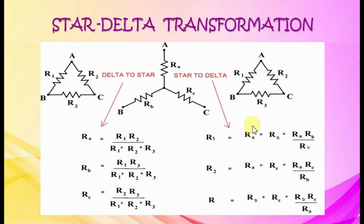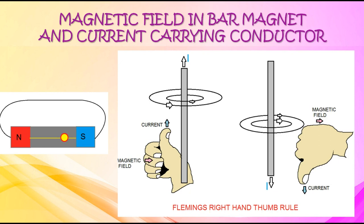Magnetic field in a bar magnet and current-carrying conductor. Inside a bar magnet, magnetic flux flows from south to north; outside, flux flows from north to south. When a conductor carries current, a flux develops around it. The direction of flux is given by Fleming's right-hand thumb rule: if a current-carrying conductor is held in the right hand with the thumb pointing in the direction of current, the curled fingers represent the direction of magnetic flux.